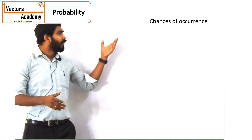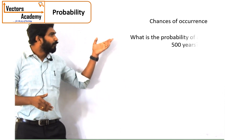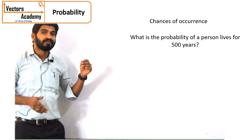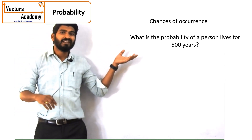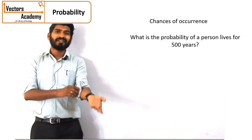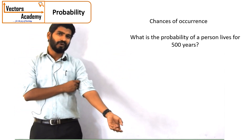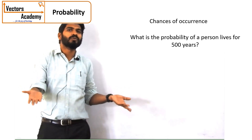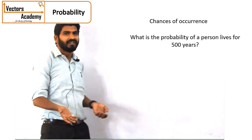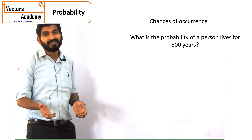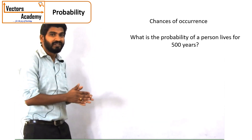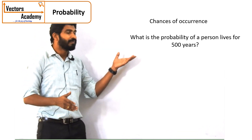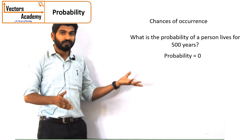For example, the probability that a person lives for 500 years. You can see the chances that a person lives for 500 years is probably 0. There is 0 percent chance that a person lives for 500 years, so the probability can be set to be 0.